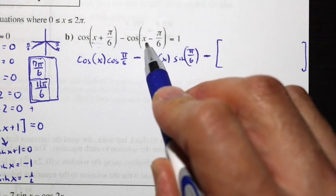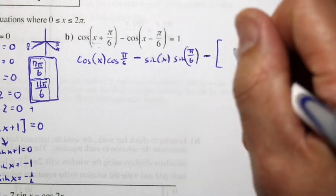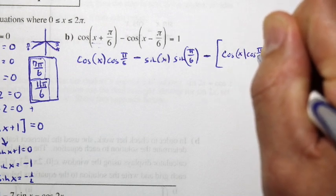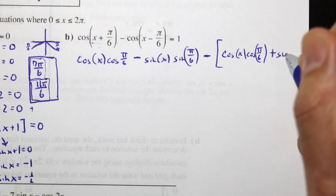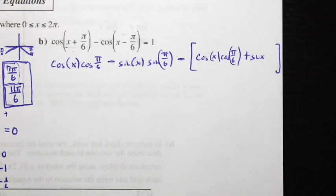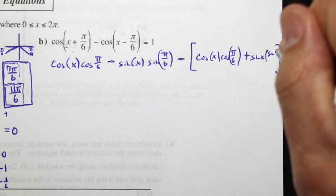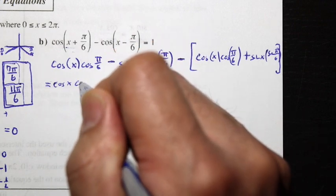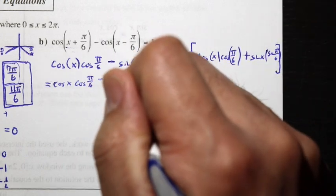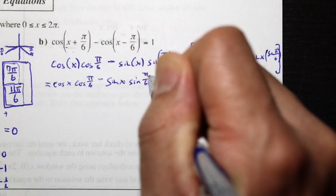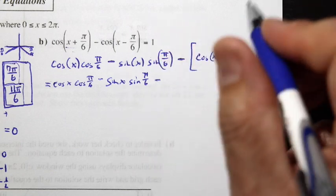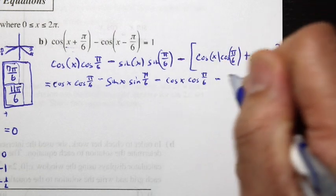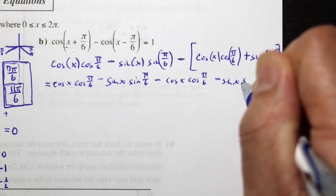We also use the subtraction formula for cosine: cos(A - B) = cos A cos B + sin A sin B. Expanding both: cos x cos(π/6) - sin x sin(π/6), minus the quantity cos x cos(π/6) + sin x sin(π/6).